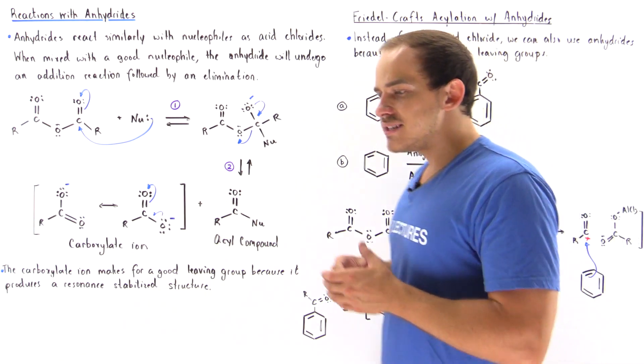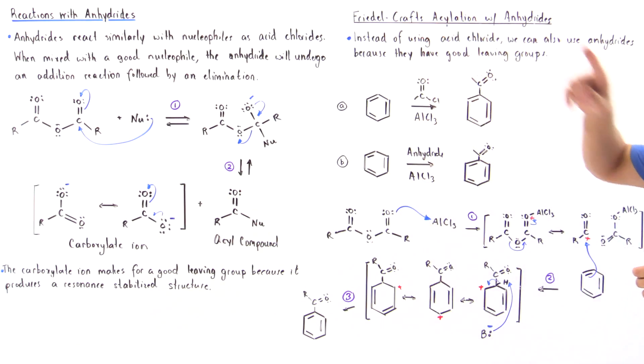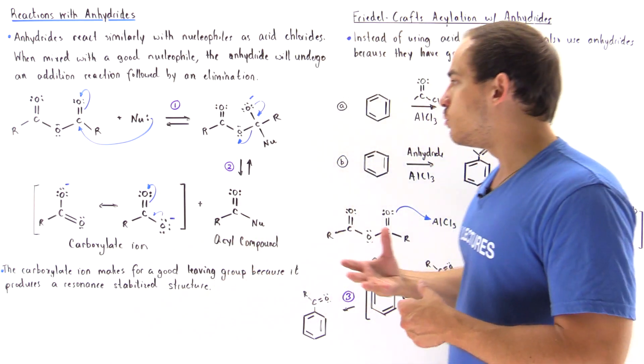Now, way back when we discussed an important reaction with benzene rings known as the Friedel-Crafts acylation and we used the acid chloride as well as aluminum chloride.